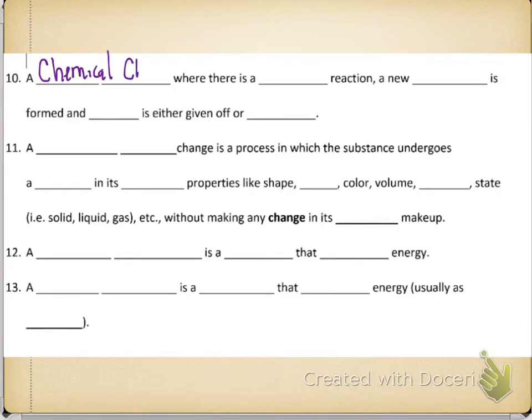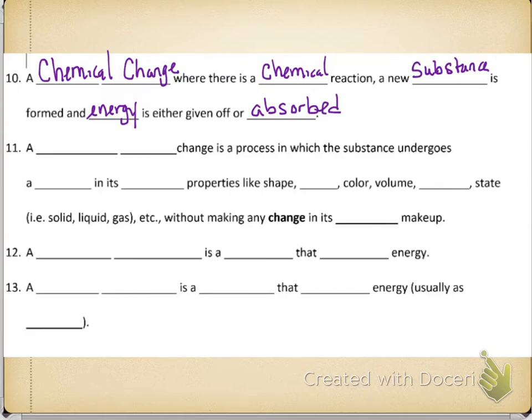And the first type is a chemical change. The chemical change is where there is a chemical reaction. A new substance is formed and energy is either given off or absorbed. So that is a chemical change. Some examples of a chemical change.